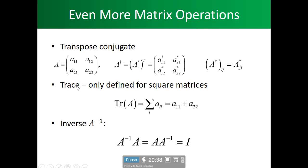The trace only applies to a square matrix — it can't be used for anything else. It's defined by the numbers on your diagonal: A11, A22, A33, A44, and so forth. The trace is the sum of those diagonal elements.